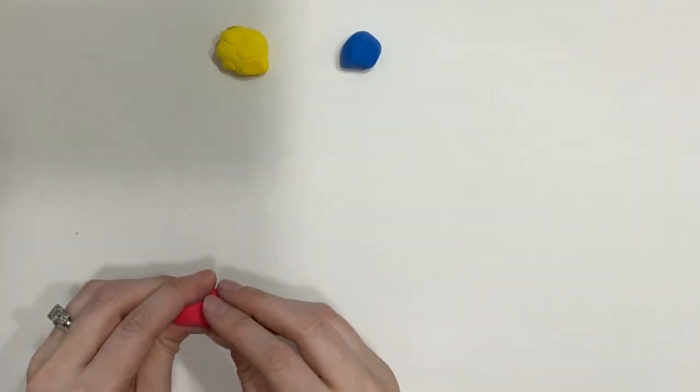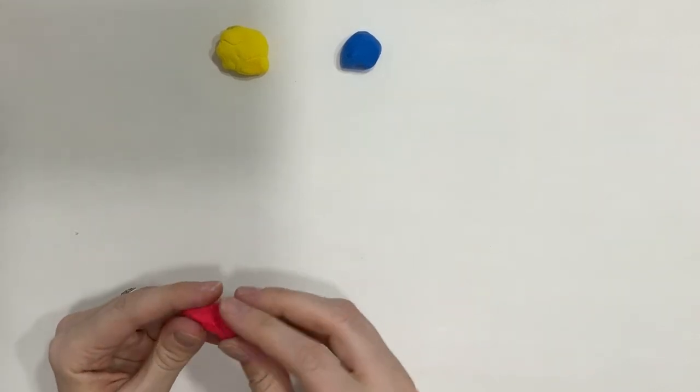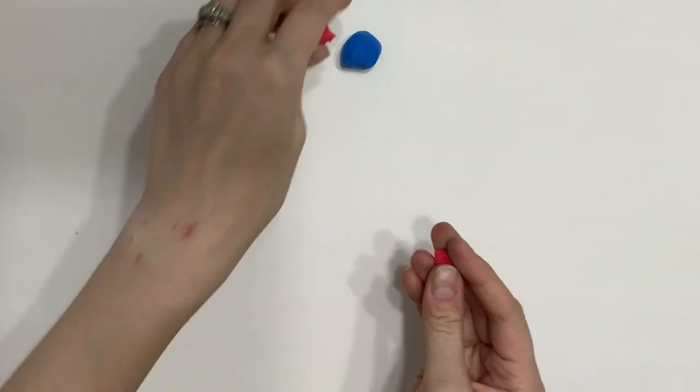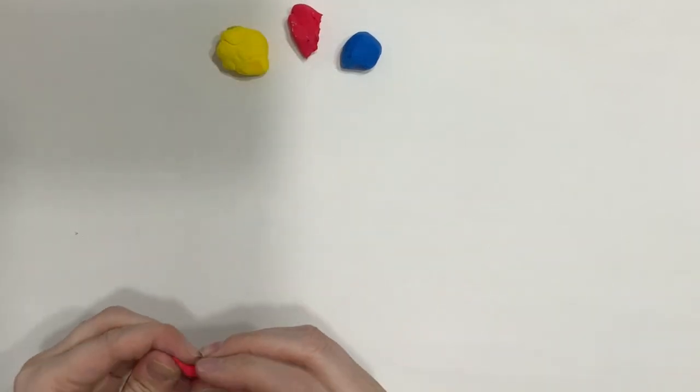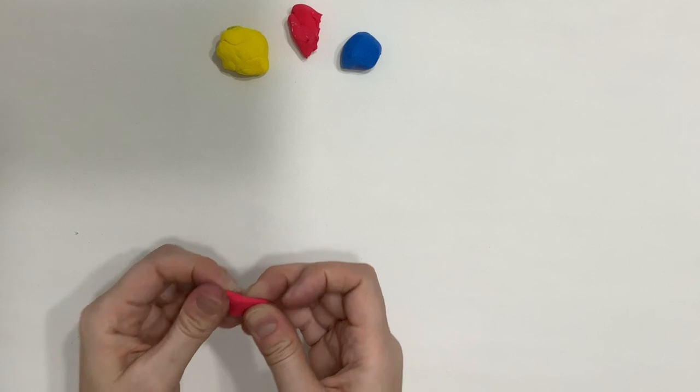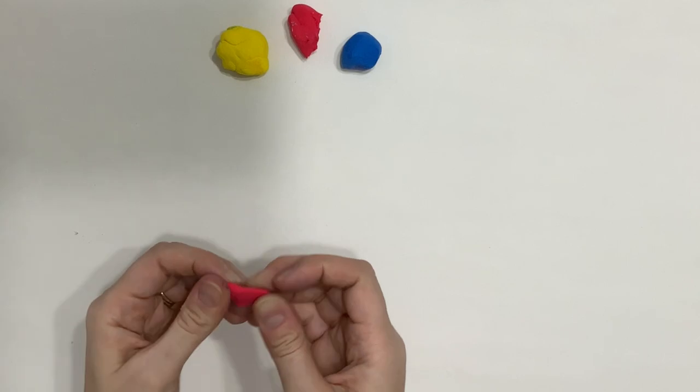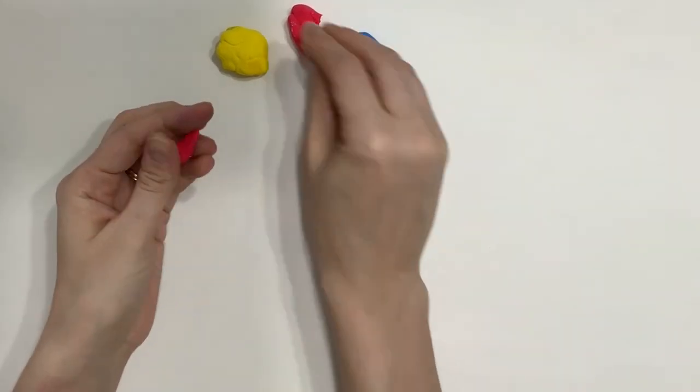The other way that you can create colors to use for Model Magic is to mix them using the primaries, which are red, yellow, and blue. When we combine two primary colors, we make what's called a secondary color. To make our first secondary color, rip off a small amount of red and a small amount of yellow.